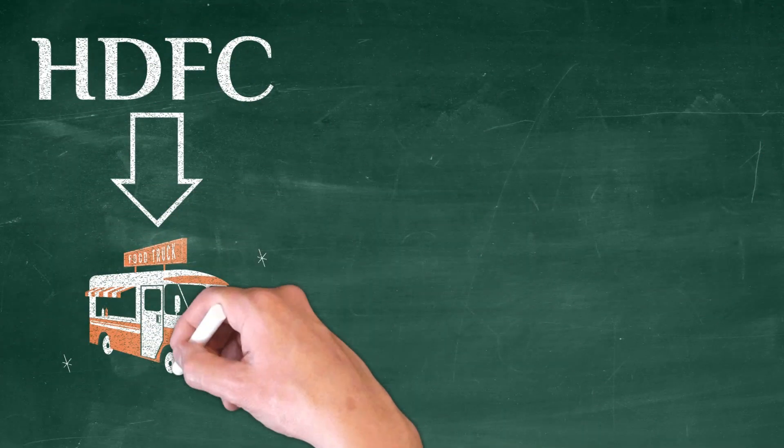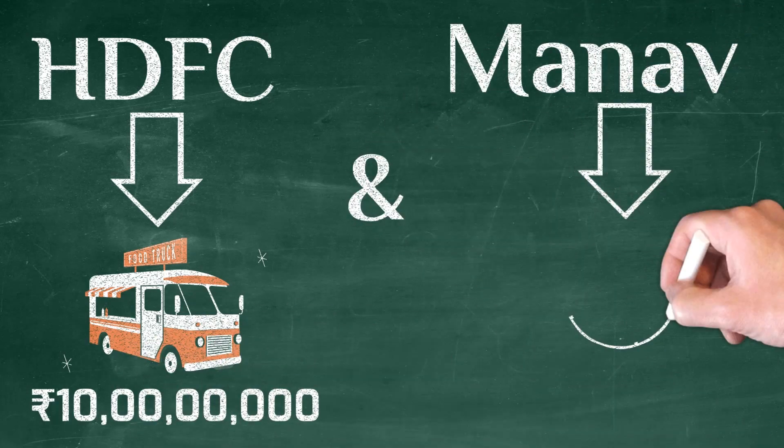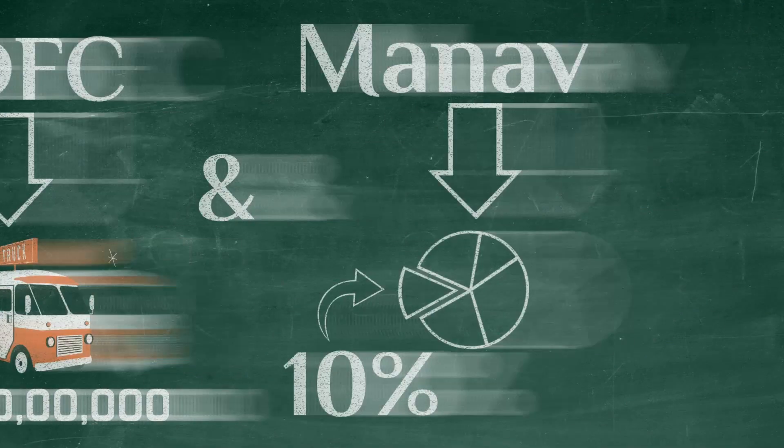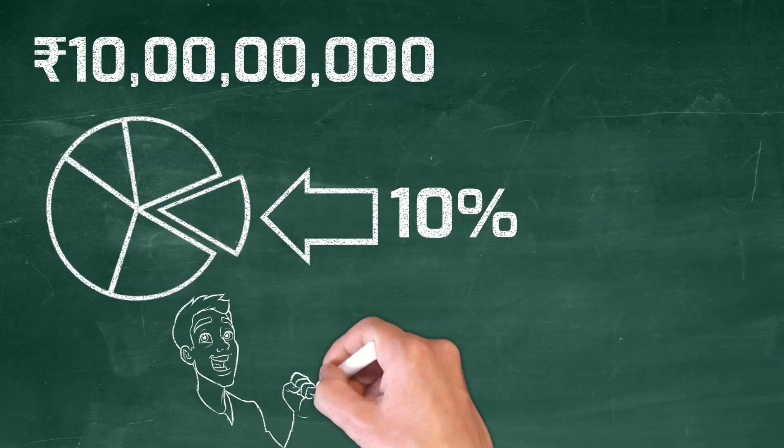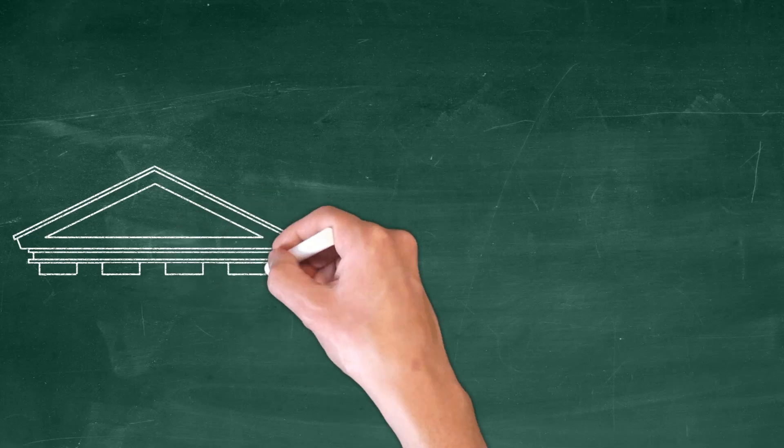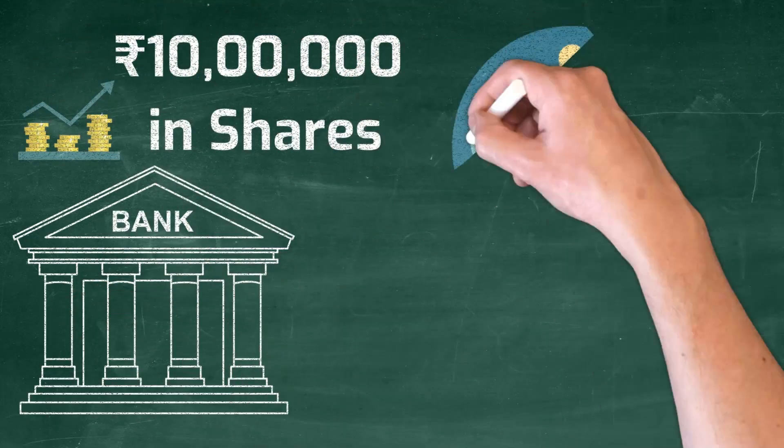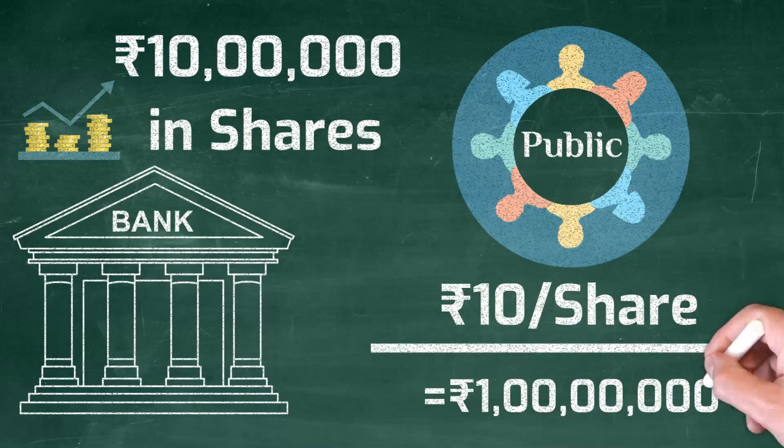HDFC values Manav's food truck at 10 crore rupees, and Manav decides to sell 10% of his company. 10% of 10 crore rupees means Manav will be raising 1 crore rupees. The investment bank decides they will be issuing 10 lakh shares to the public at 10 rupees apiece.